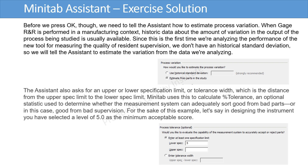Before we press OK, we need to tell the Assistant how to estimate process variation. When Gauge R&R is performed in a manufacturing context, historic data about the amount of variation in the output of the process being studied is usually available. Since this is the first time we're analyzing the performance of the new tool for measuring the quality of resident supervision, we don't have a historical standard deviation, so we will tell the Assistant to estimate the variation from the data we are analyzing. The Assistant also asks for an upper or lower specification limit, or tolerance width, which is the distance from the upper specification limit to the lower specification limit.